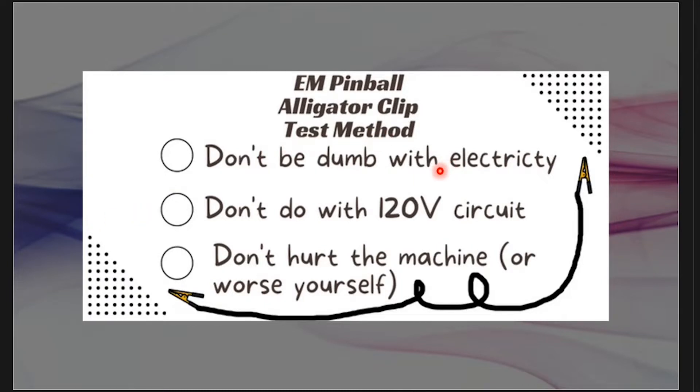When you're messing with electricity, bad things can happen. So kind of know what you're doing. Also don't do this test with a 120 volt circuit. Make sure you're on the lamp circuit or the solenoid circuits, usually plus 6 volts or plus 25, 50 volts range. But don't do it with 120 volts and don't hurt yourself or the machine.